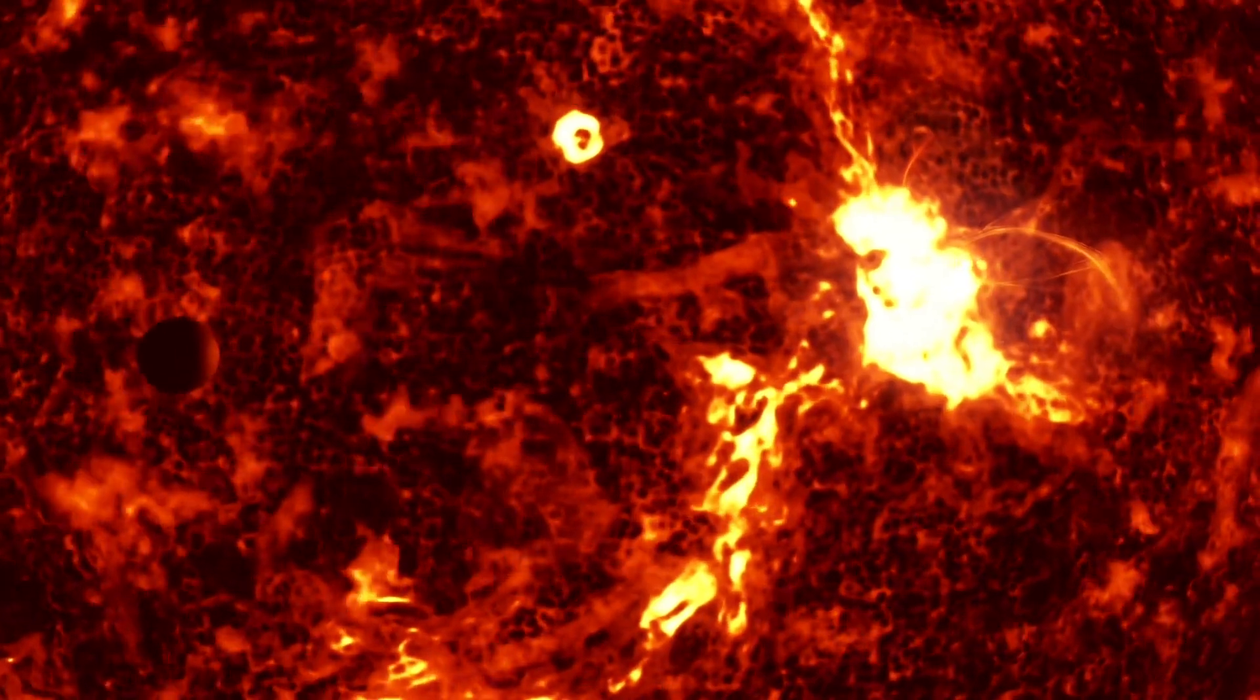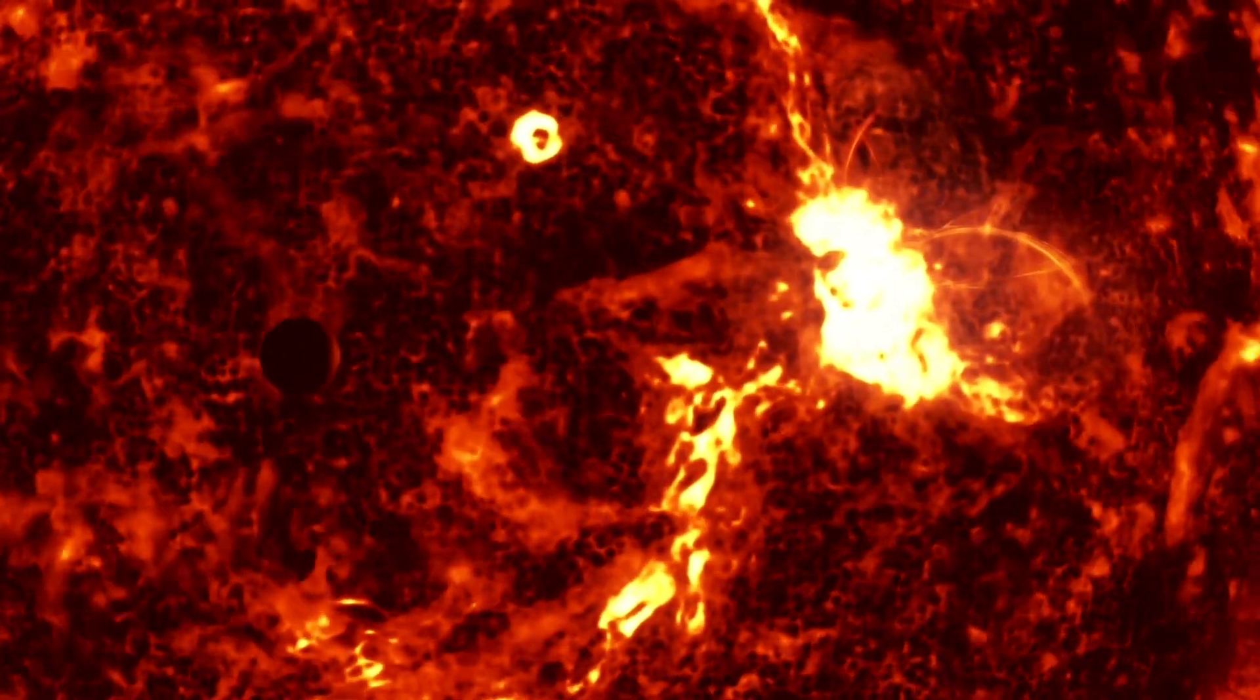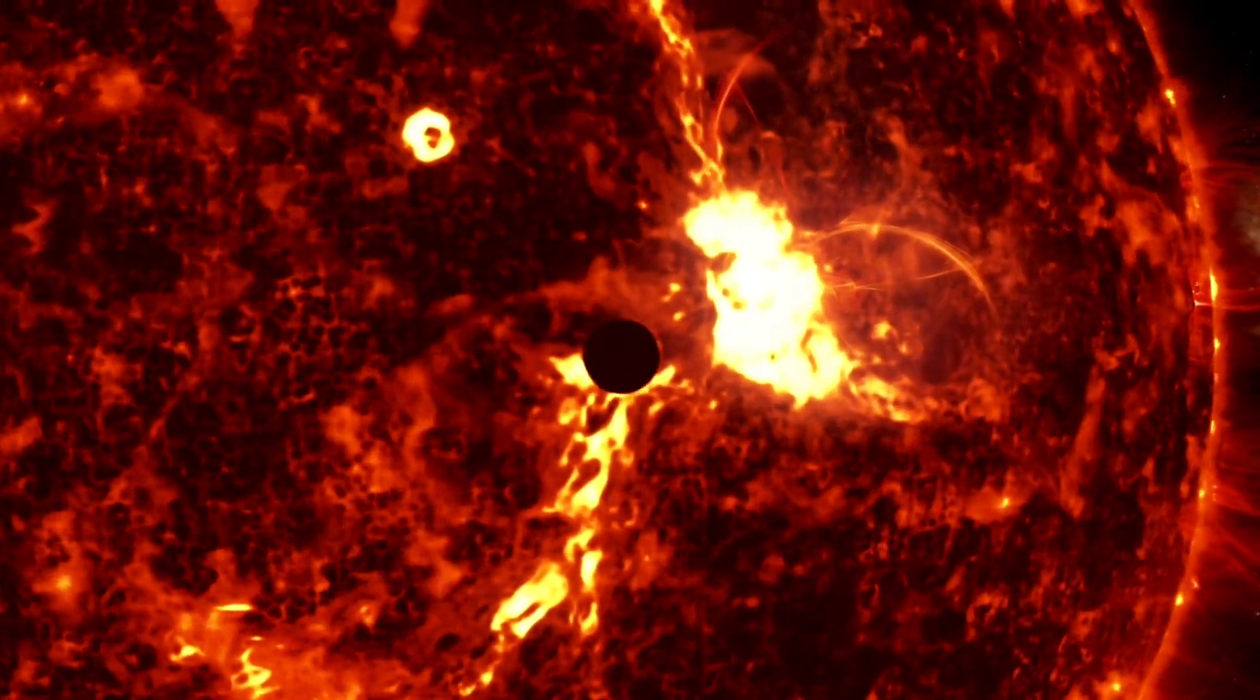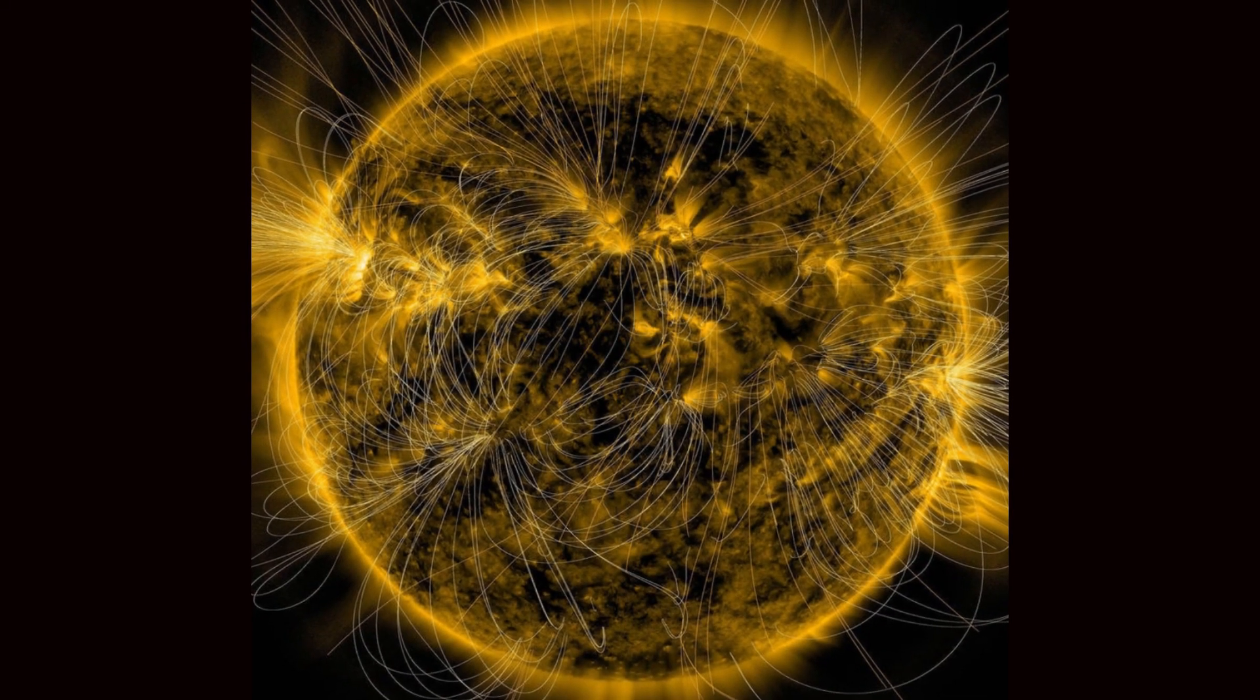Solar flares appear near sunspots on the surface of sun, and the magnetic field on the surface of the sun is relatively higher, leading to tangling of magnetic field lines.